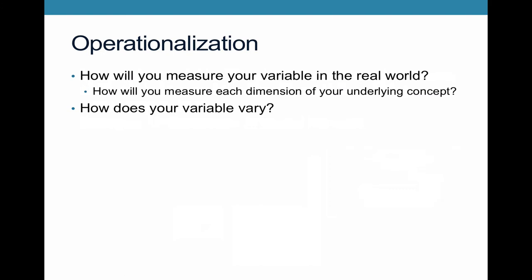Operationalization is the process of measuring our variables. We've laid out the logic behind what variables are, and now we think about how we actually get to our variables. You need to think about how you would measure each dimension of your underlying concept. When you're conceptualizing, you might have several dimensions behind your variable, so you need to figure out how to capture each element of those, and think about how your variable will vary. Thinking about the reform durability example, you need to define what you mean by reform durability, which will take different forms for tax reform versus deregulation.